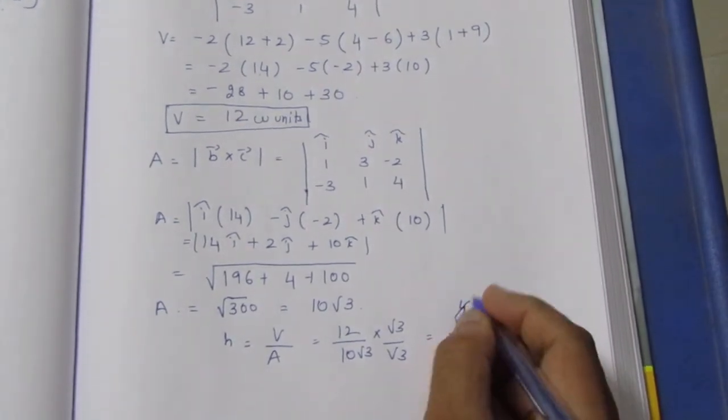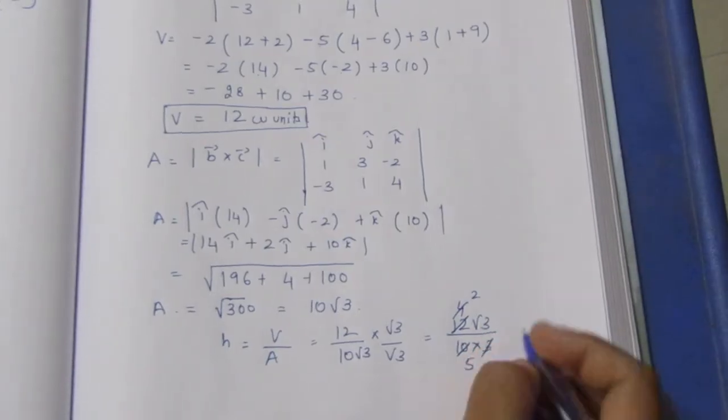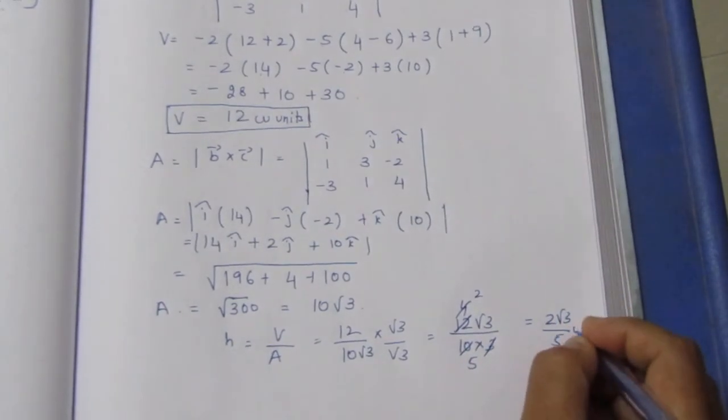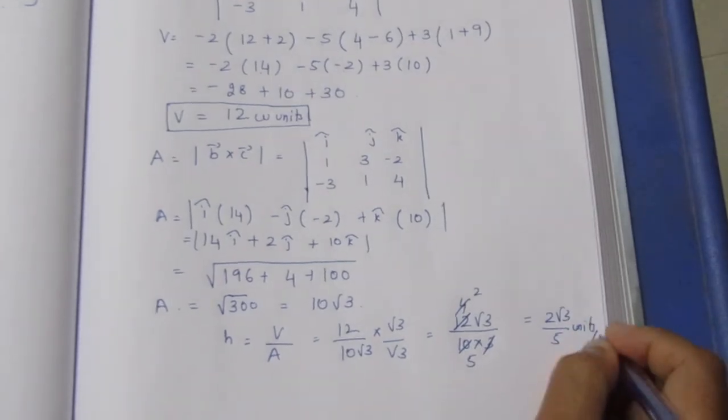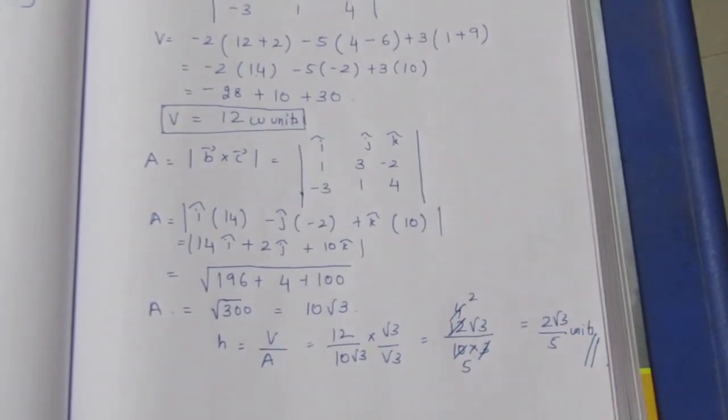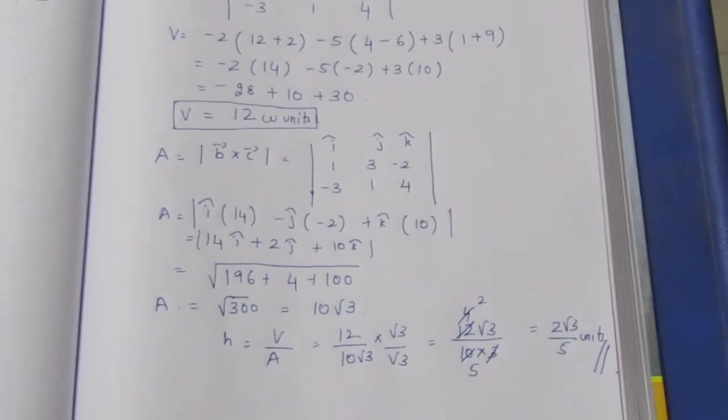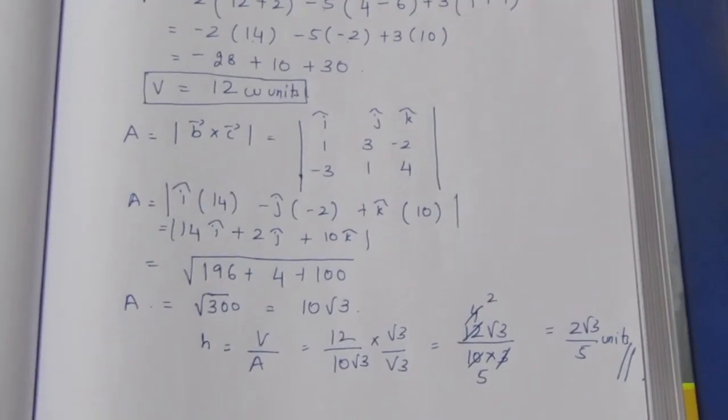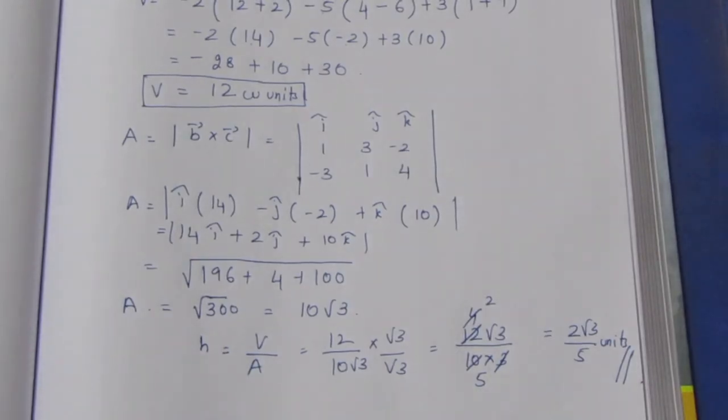Simplifying: 12 divided by 3 is 4, and 30 divided by 10 is... wait, 3×4 is 12, 2×5 is 10, so we get 2√3/5 units. The altitude equals 2√3/5 units. Thank you.